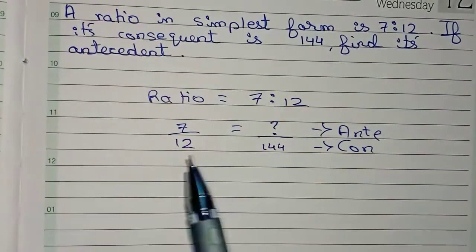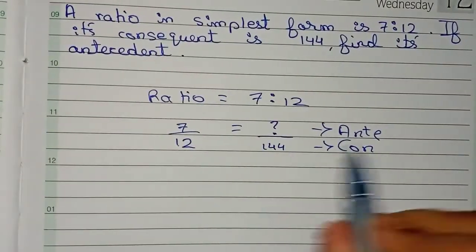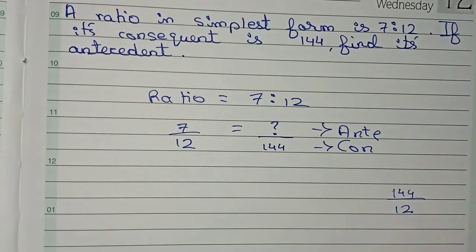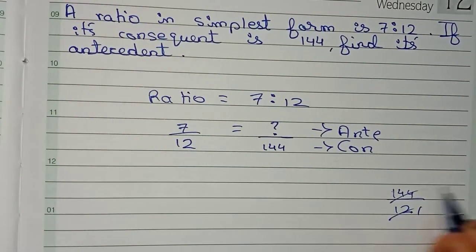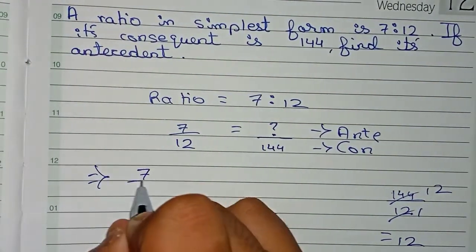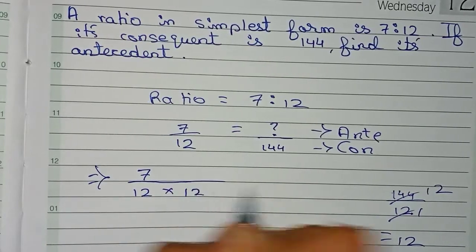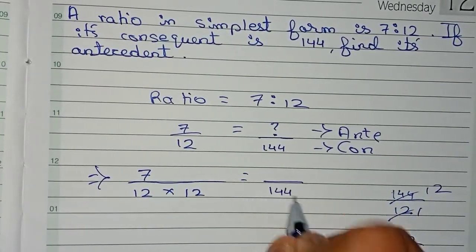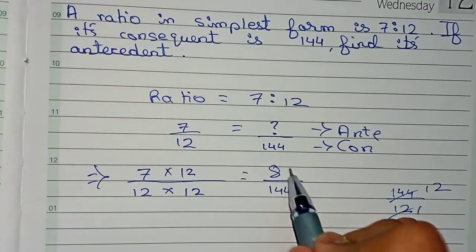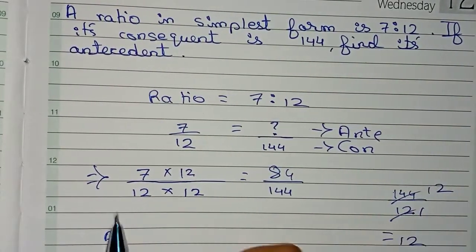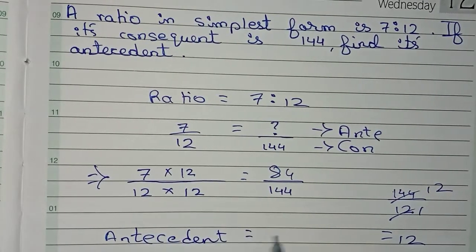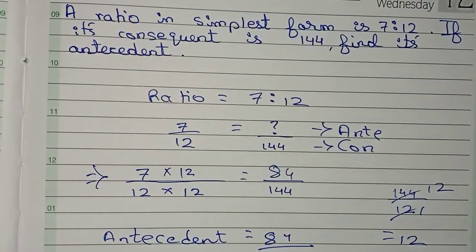We need to think of a number such that 12 multiplied by that number equals 144. So we divide 144 by 12, which gives 12. So 12 into 12 equals 144. Now we also multiply 7 by 12, which gives 7 into 12 equals 84. Therefore, the antecedent equals 84. That is the final answer for this question.